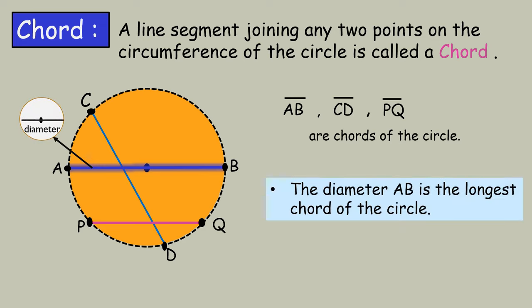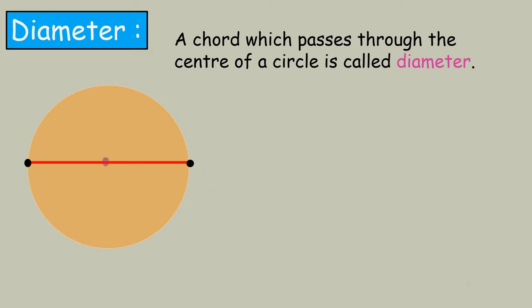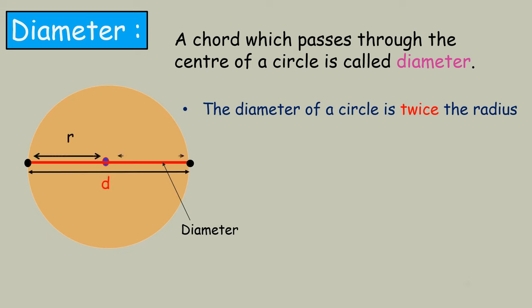Thus, the diameter AB is the longest chord of the circle. Diameter: a chord which passes through the center of a circle is called diameter. Here, the diameter of a circle is twice the radius. That is, diameter equals 2 times radius.